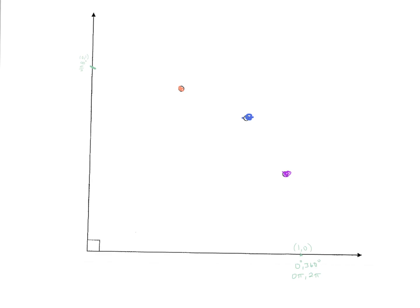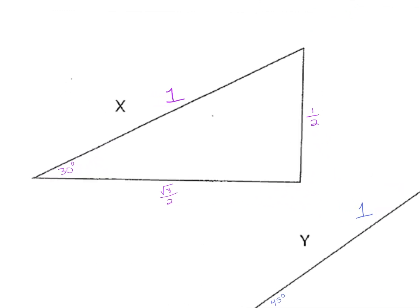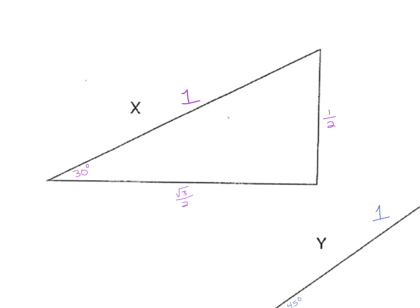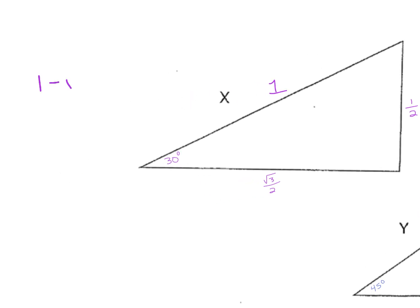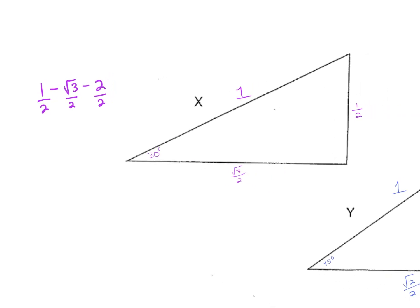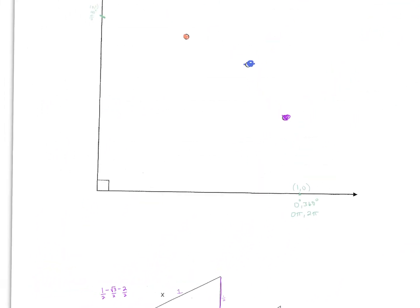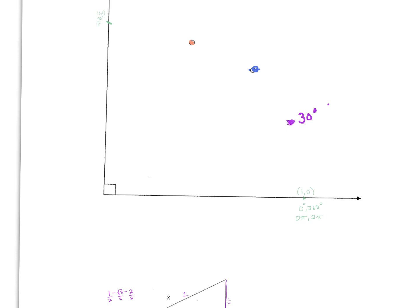Let's focus on those middle three angles and refresh how we get those coordinates. For triangle X with the 30-degree angle, we know the 30-60-90 ratio is 1 : √3 : 2. But we want our hypotenuse — our radius — to equal one, so we divide each side by 2. That gives us x-coordinate √3/2 and y-coordinate 1/2. So the coordinate at 30 degrees is (√3/2, 1/2).